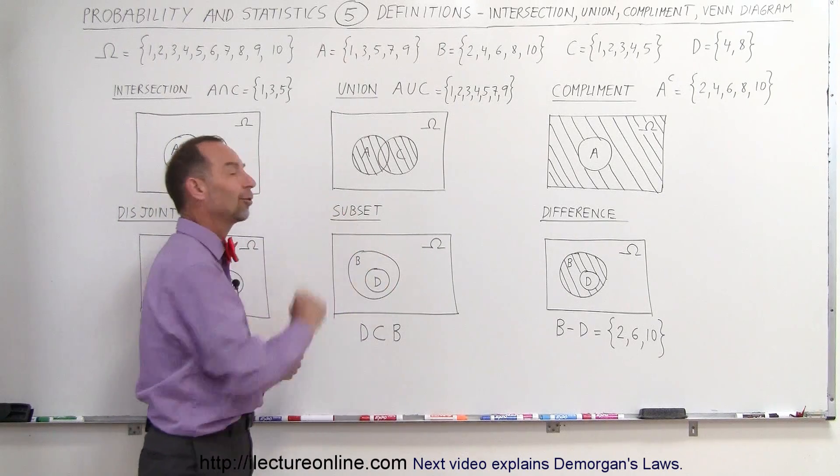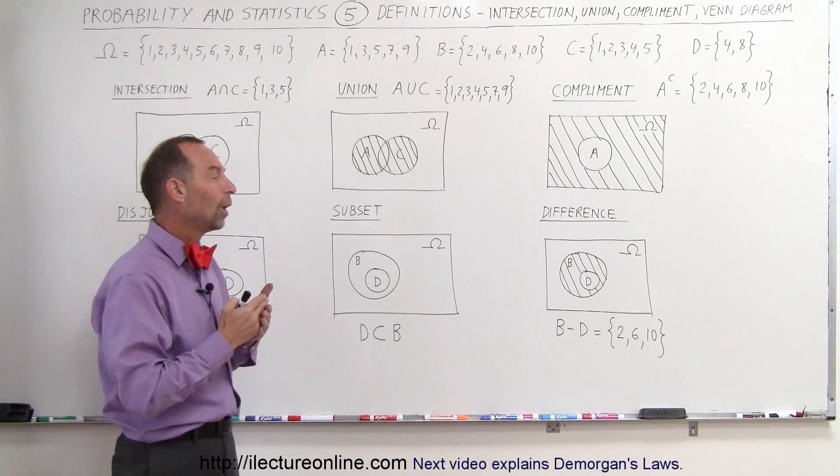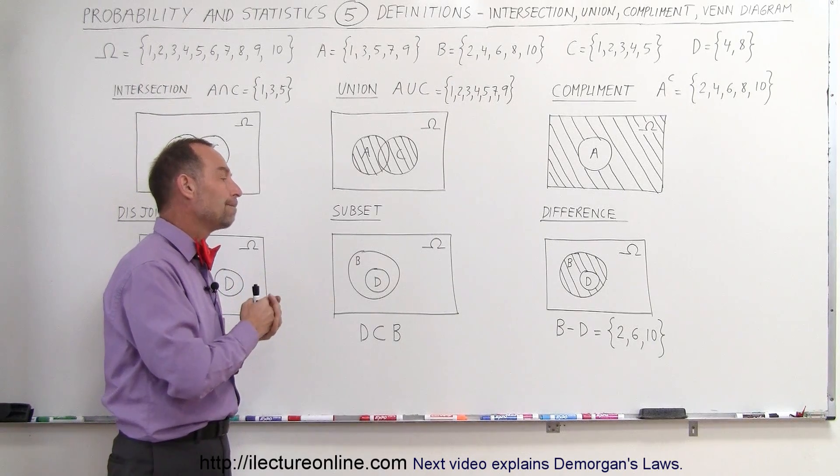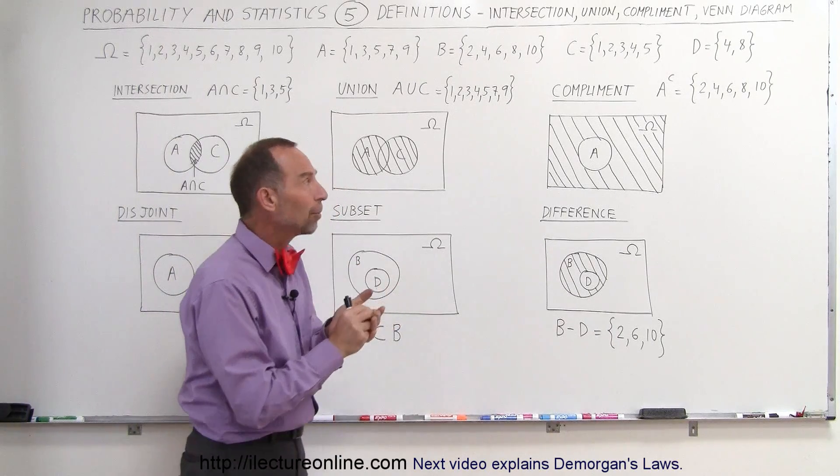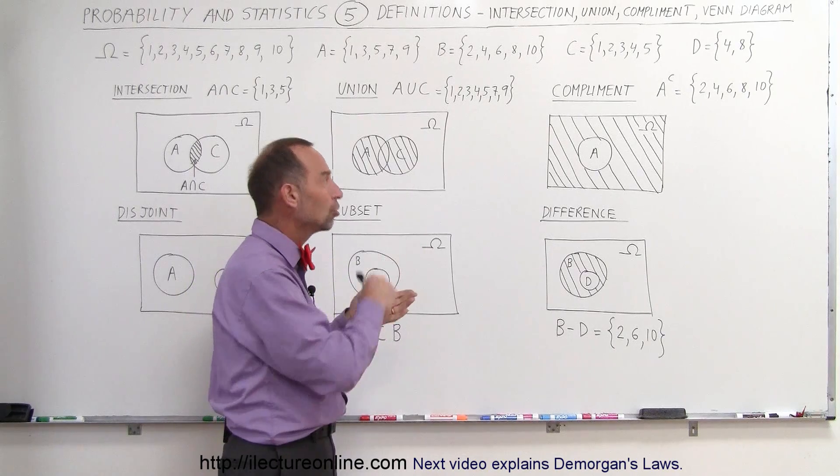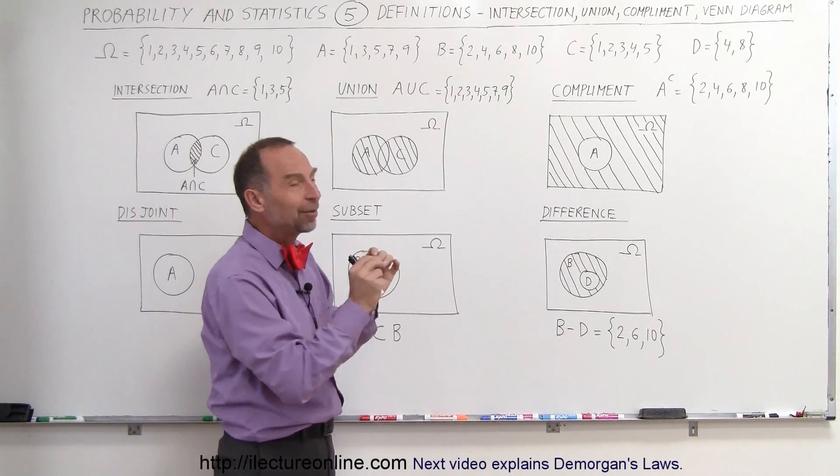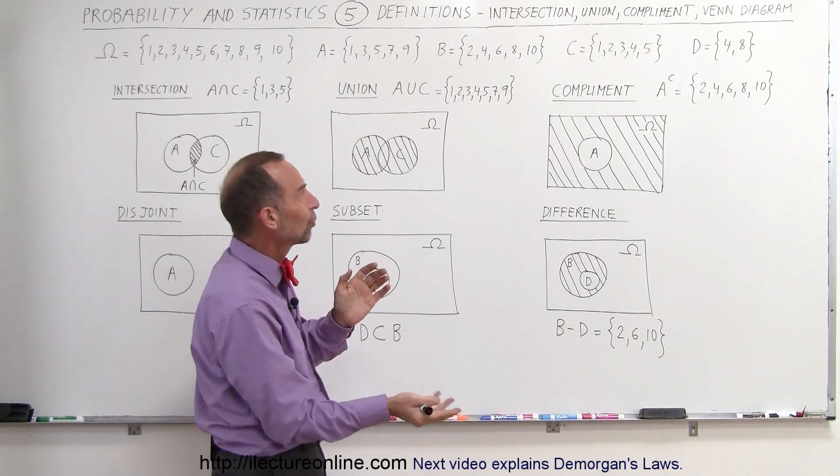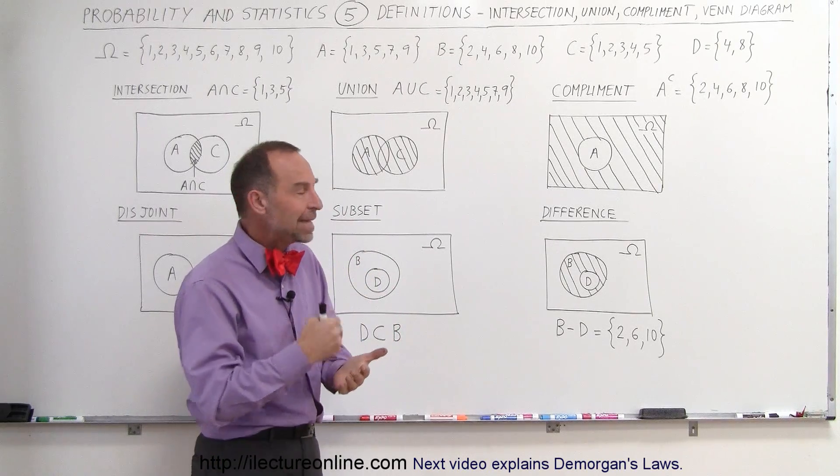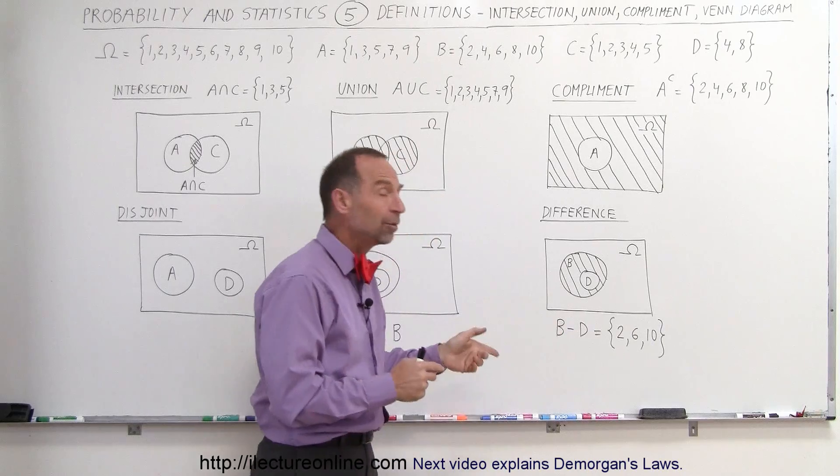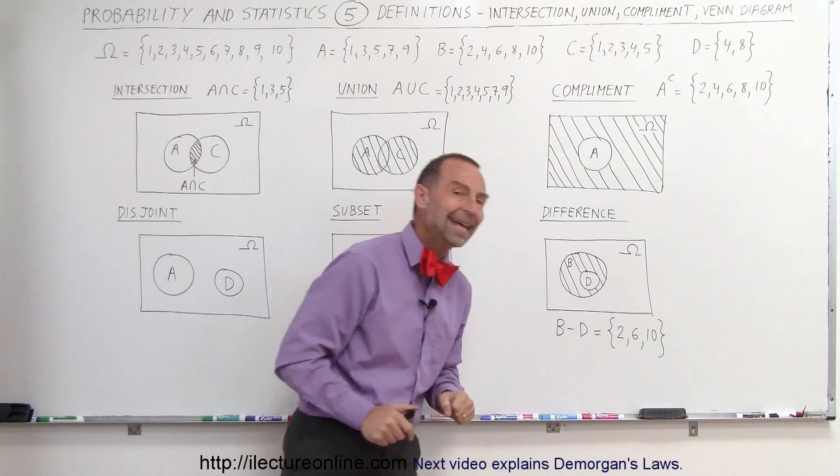One more term is called the difference. Sometimes we want to know what is in B but not in D. Since all of the members or elements in D also belong to B, if we subtract all the elements from D that we find in D from B, what is left over is called B minus D or the difference of B and D. So B minus D means all the elements in B minus the ones that also belong to D. The leftover is 2, 6, and 10.